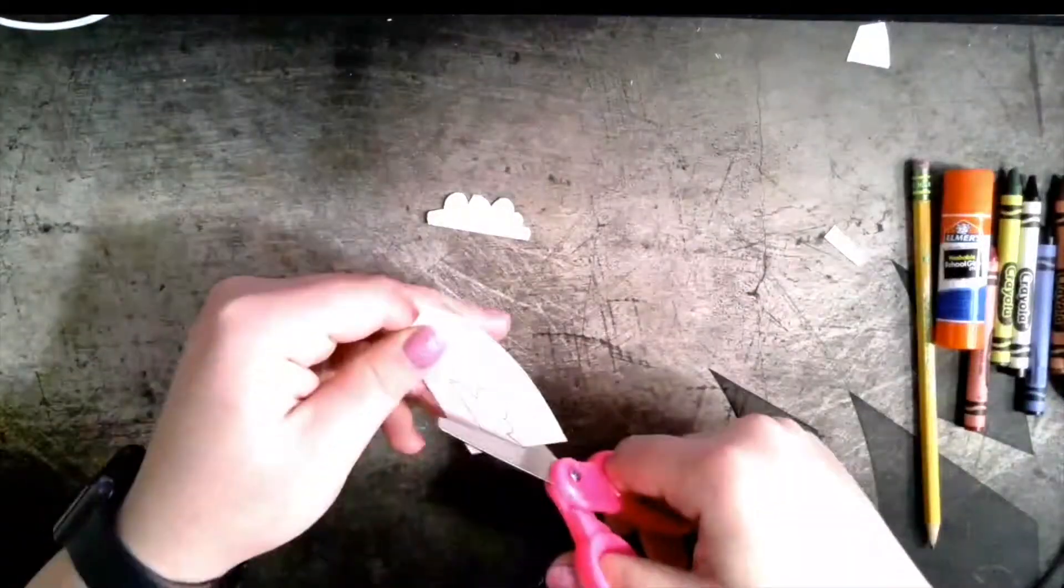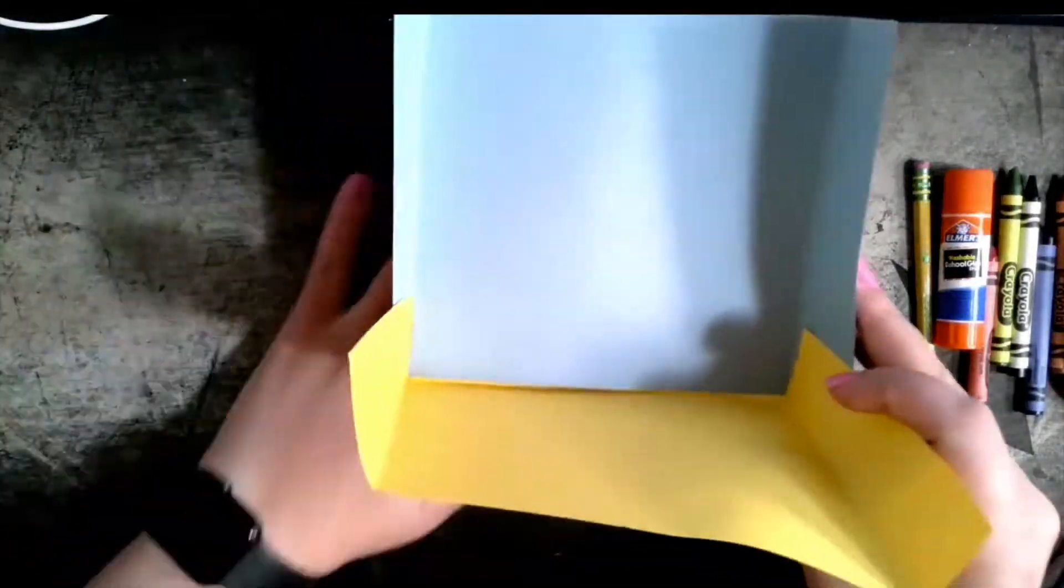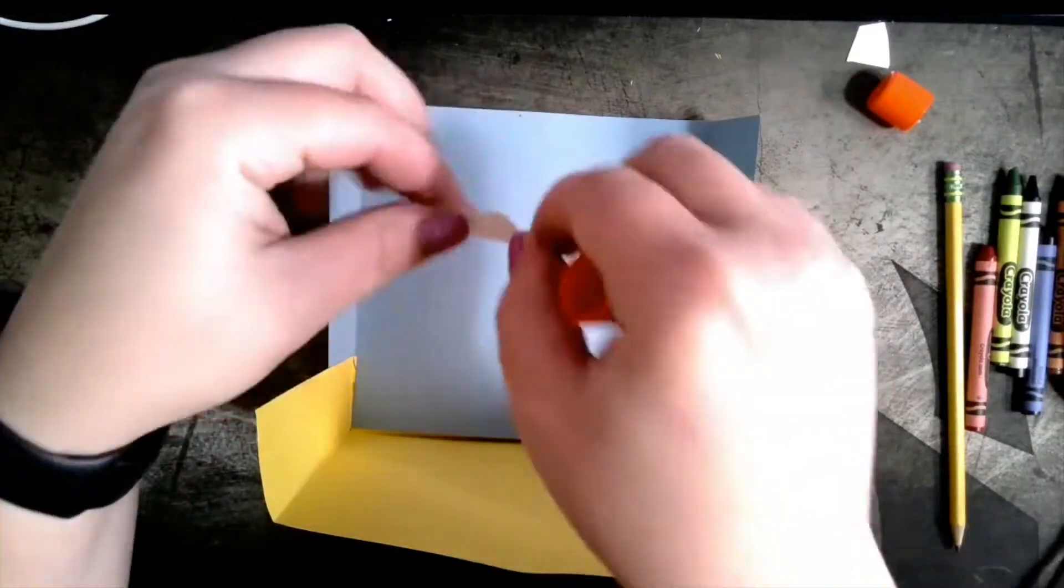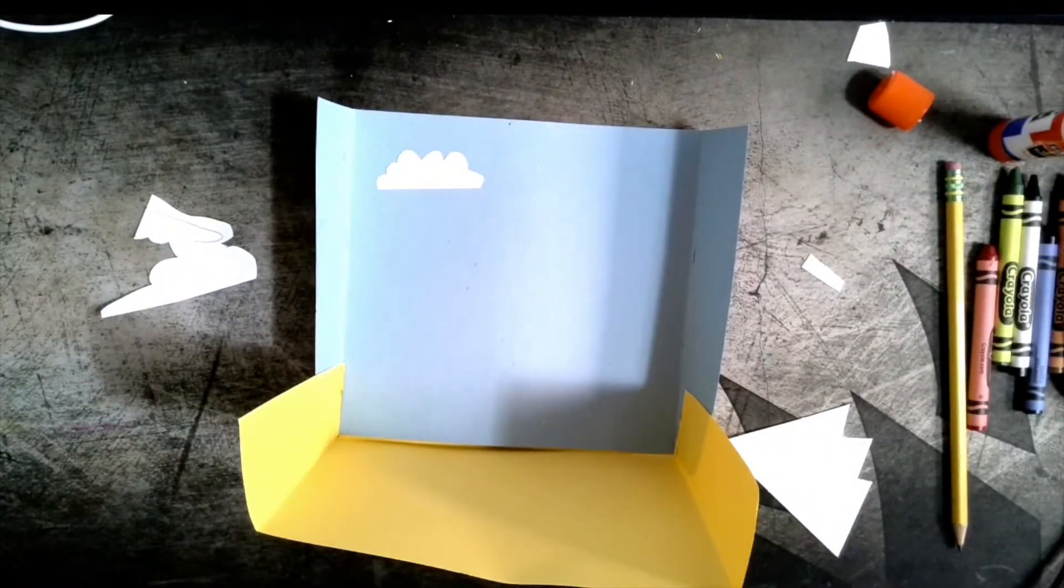You can choose to glue the clouds directly to your background paper or you can make them pop off the background. If you are choosing to glue it on, you want to hold your paper so that the background is flat against your table so that you give the glue a chance to dry.